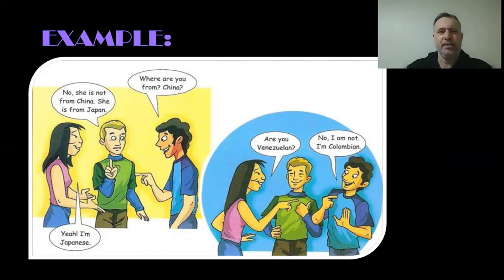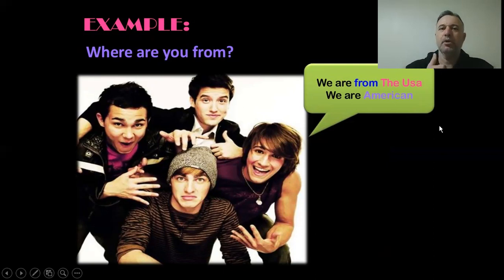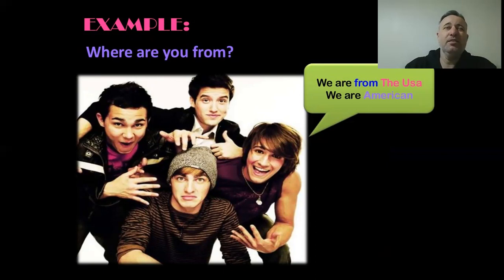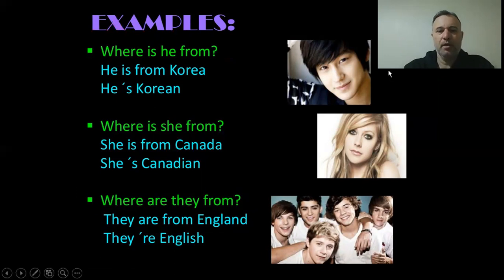Notice that you never use the plural form: we don't say 'we are Americans' — we say 'we are American.' I am American, we are American, I am Brazilian, we are Brazilian. Brazilian is an adjective, it's a quality. More examples: 'Where is he from? He's from Korea, he's Korean. Where is she from? She's from Canada, she's Canadian. Where are they from? They're from England, they're English.'